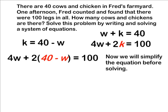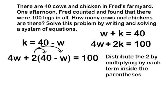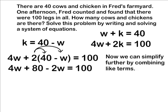Before solving this equation, we can simplify first. I'm going to multiply the 2 by each term inside the parentheses using the distributive property. This simplifies to 4w plus 80 minus 2w equals 100.